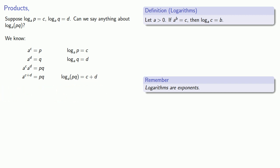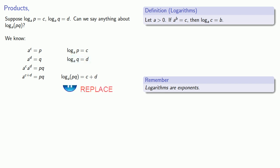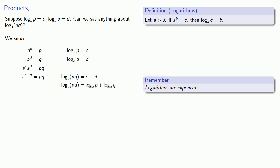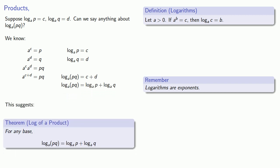Equals means replaceable: c is the same as log base a of p, and d is the same as log base a of q, so we can replace them. This suggests a general result: for any base, the log base a of pq equals the log base a of p plus the log base a of q. Sometimes we say this as: the log of a product is the sum of the logs.